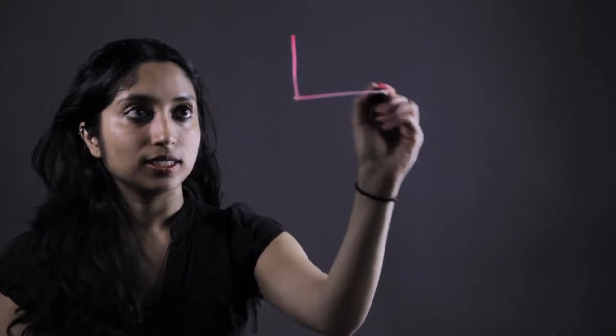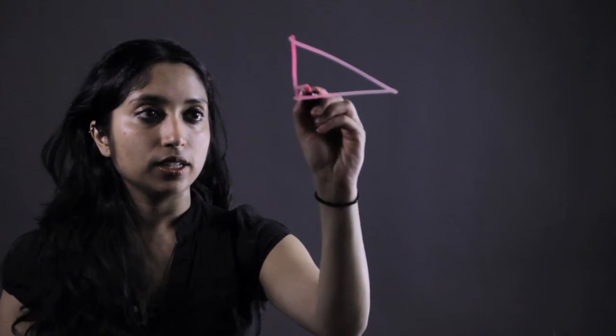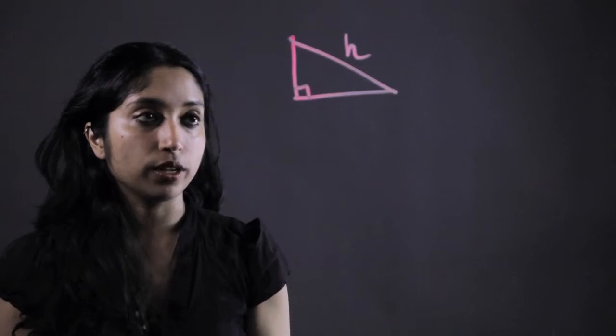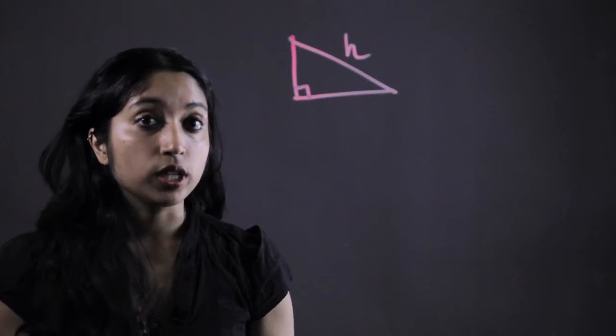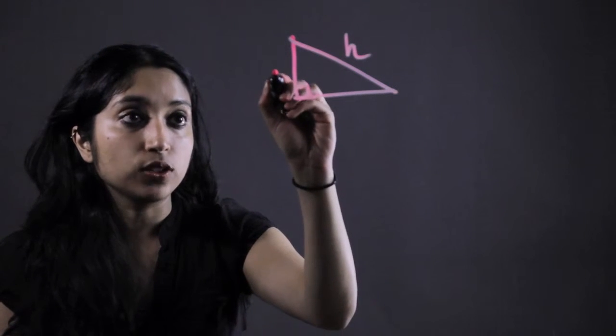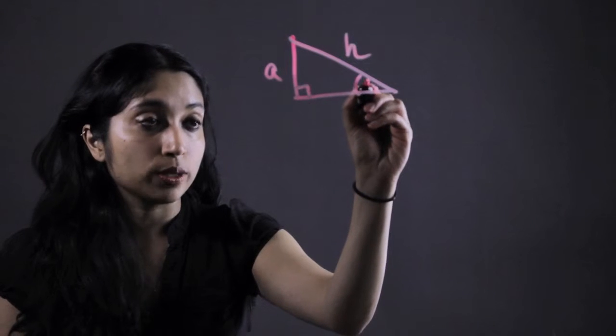So let's draw our triangle. Say we have this guy here. So you have this right angle and the hypotenuse. Now to solve for the area we need a little bit more information. So we would either need another side or some angle.